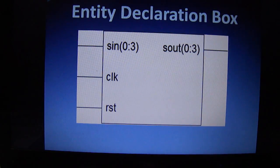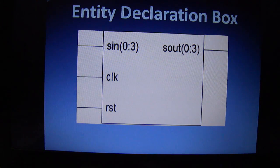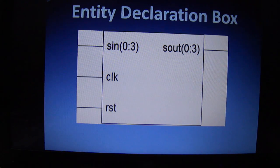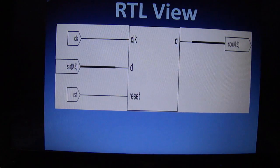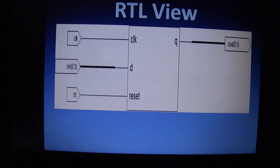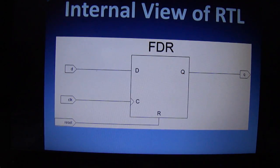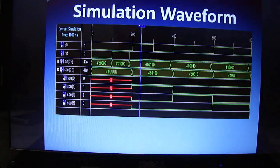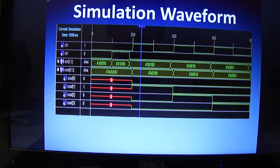After synthesizing this program, we get the entity declaration block where SN, clock, and reset are our inputs and Sout is our output. Double-clicking on this block gives us the RTL view of our parallel in parallel out register. Double-clicking again on the RTL view gives us the internal view of the RTL. Then after simulating our waveform, we get the simulation results.